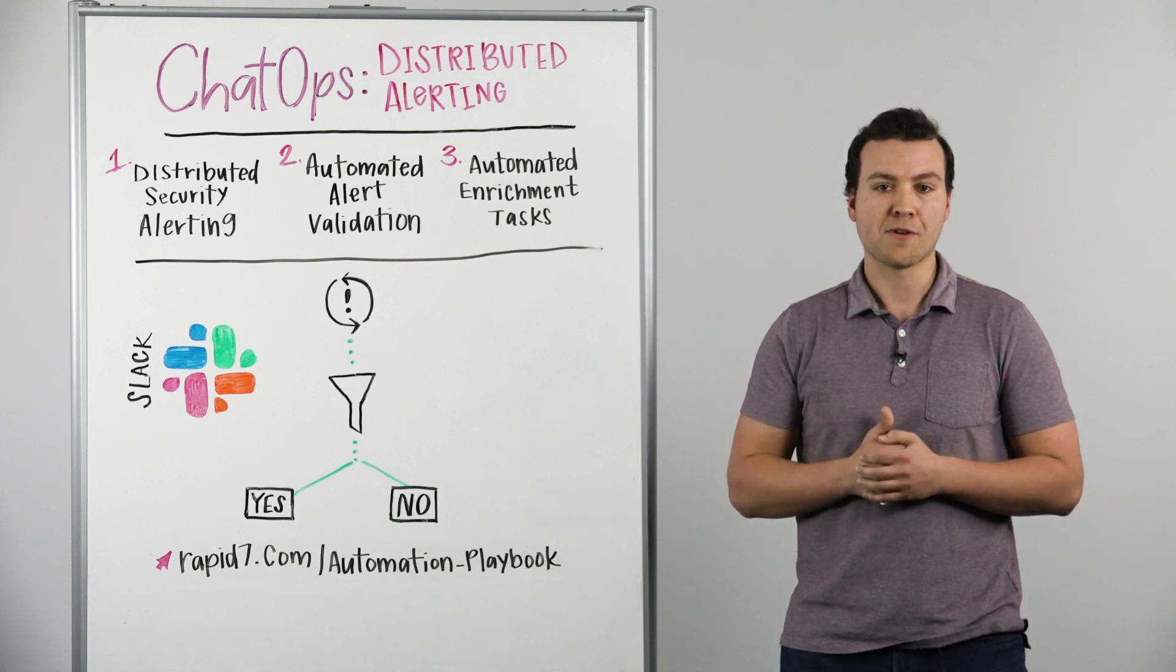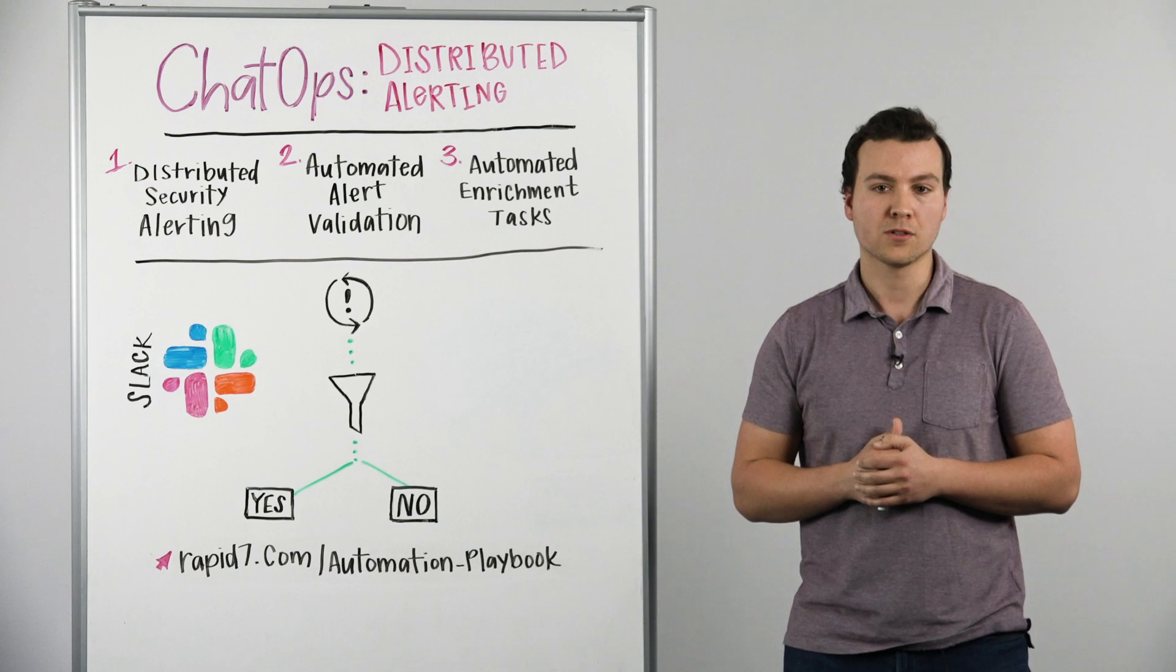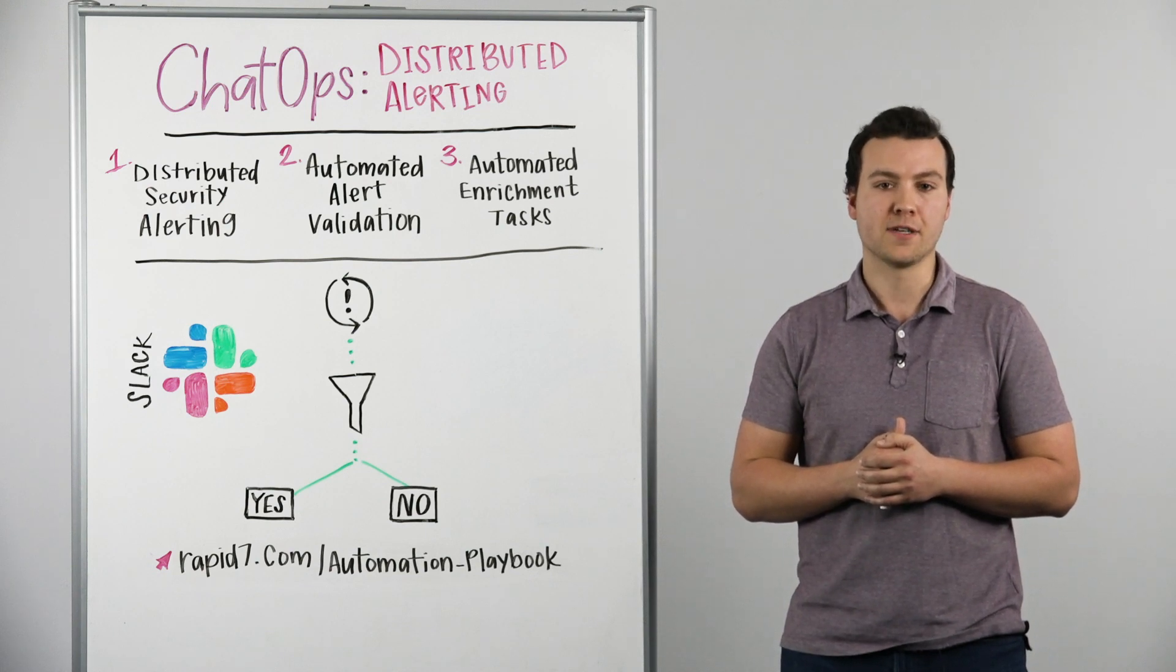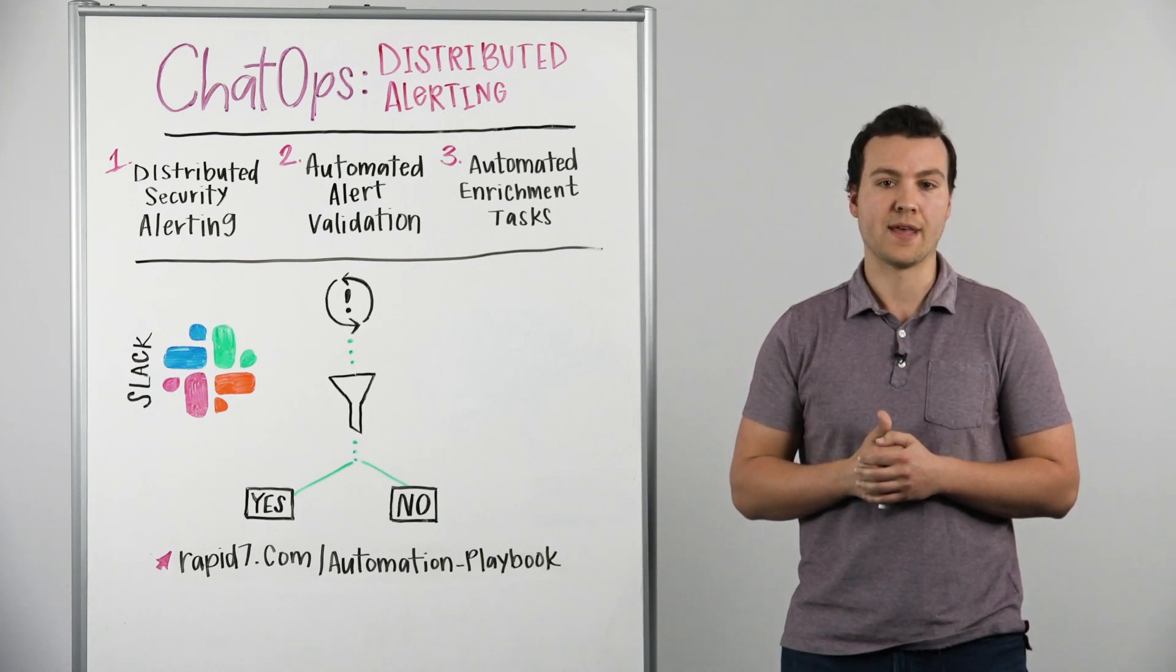When there is a real threat at hand, there are a lot of tasks that need to happen in order to respond effectively and efficiently. Automation can accelerate time to response by over 80%, and ChatOps plays a huge role in that.